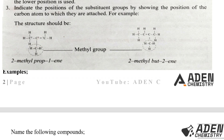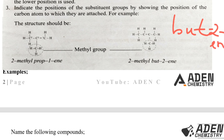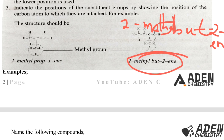For example, with four carbon atoms, the parent name is 'but-'. If the double bond is between carbon 2 and carbon 3, counting from either side gives position 2, so we write 'but-2-'. Then check for attachments: a methyl group at carbon 2 counted from the right means we write '2-methyl-but-2-ene'. That is how you name substituted alkene compounds.